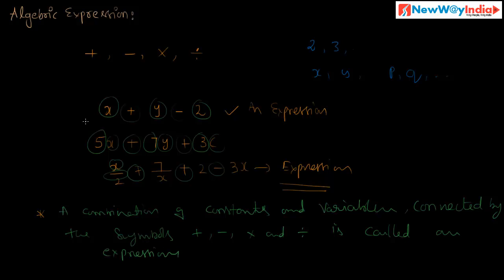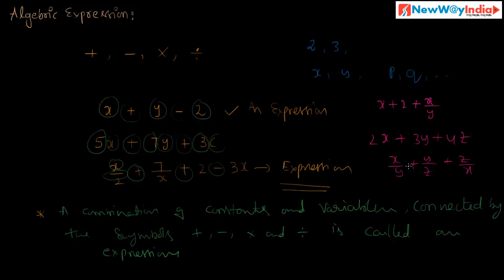Consider other expressions: x plus 2 plus x by y — this is an expression. 2x plus 3y plus 4z — this is an expression. x by y plus y by z plus z by x — this is an expression. Here the literals and constants are connected by the symbols plus, minus, into, and divided by. This combination is called an expression.